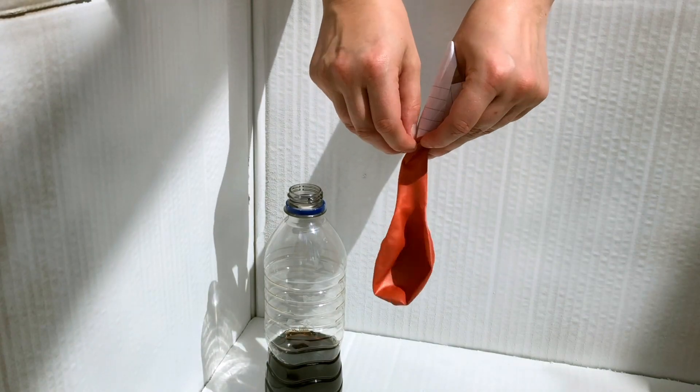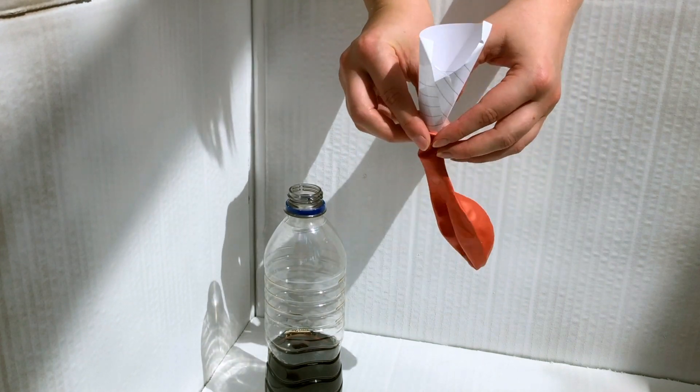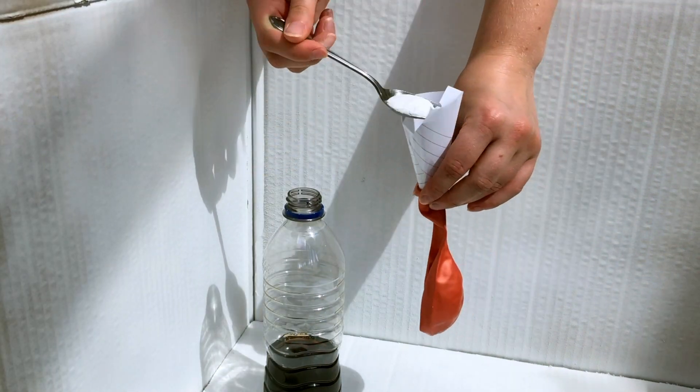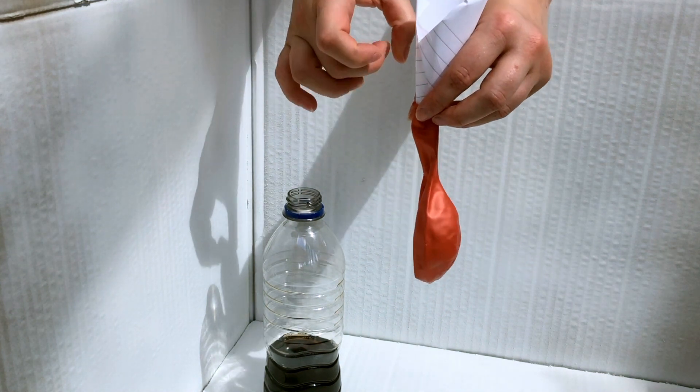Step three, put the funnel into the mouth of the balloon like this. Now pour one teaspoon of either baking soda or bicarbonate of soda into the balloon through the funnel.